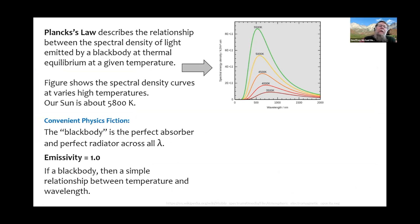Stepping back to address urban heat islands: Planck's law describes the relationship between the spectral density of light — the color of the spectrum — emitted from a black body as a function of temperature. A black body is a convenient fiction of physics: a perfect absorber and a perfect emitter. In this graphic we see Planck curves for various stars of different temperatures: a red giant might be 3,500 Kelvin, our sun is a little more than 5,500 Kelvin.